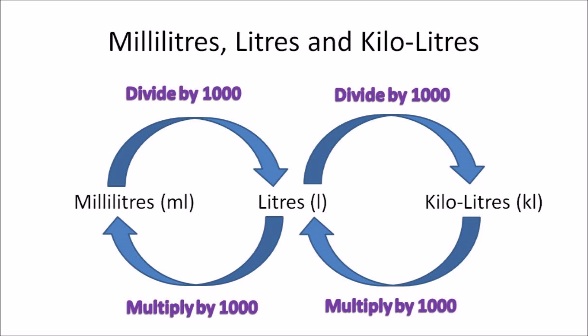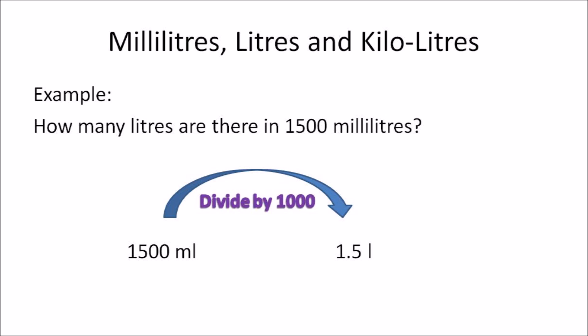To convert milliliters to liters, you need to divide the amount by 1000. To convert liters to kiloliters, you again divide by 1000. Converting back from kiloliters to liters, you multiply by 1000, and to convert liters back to milliliters, you multiply by 1000. Let's look at an example.